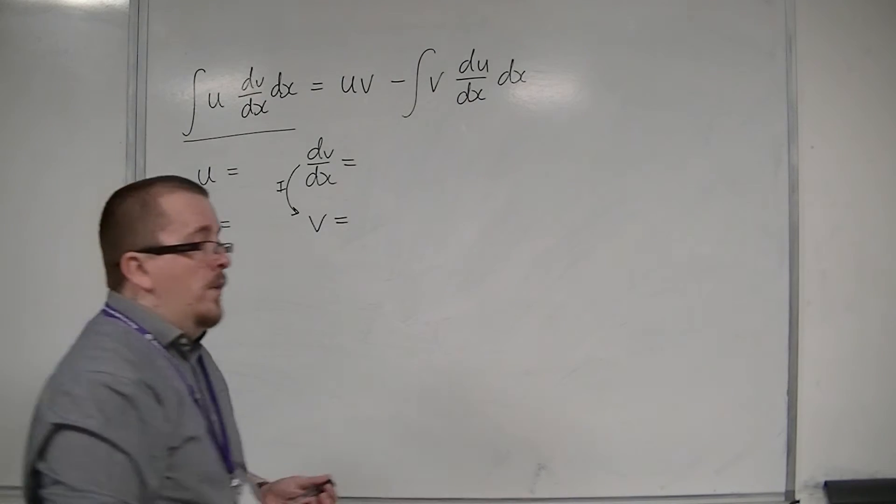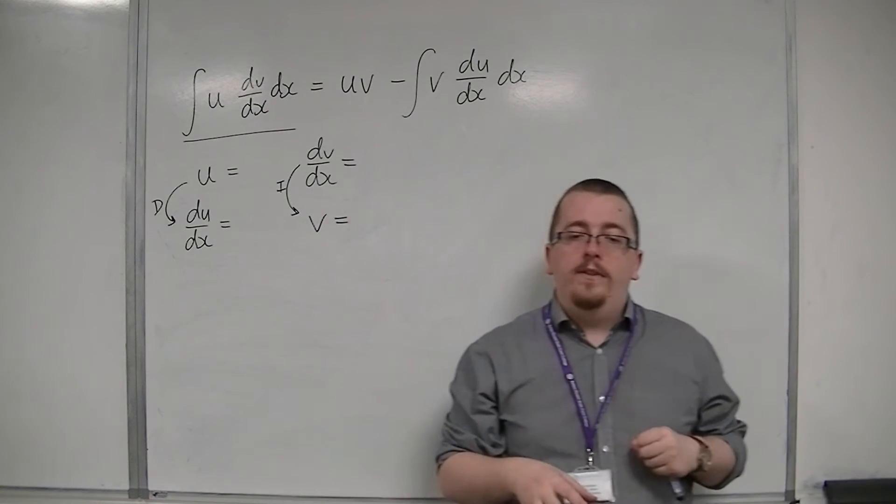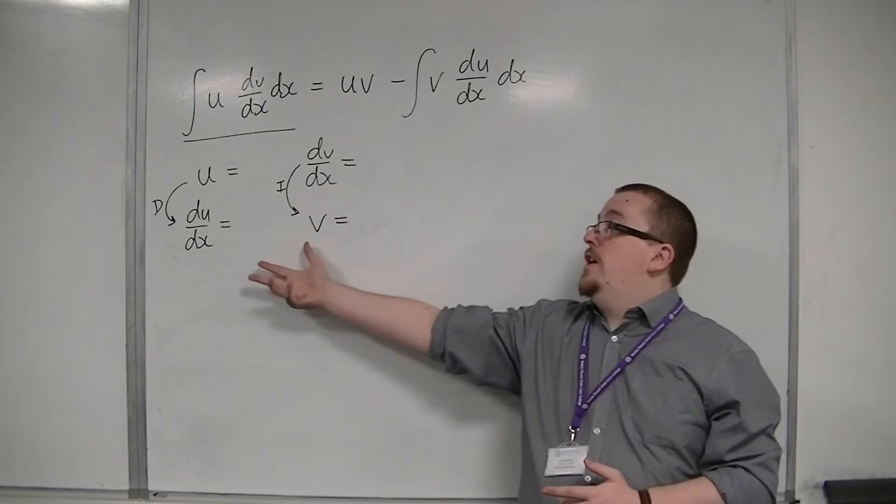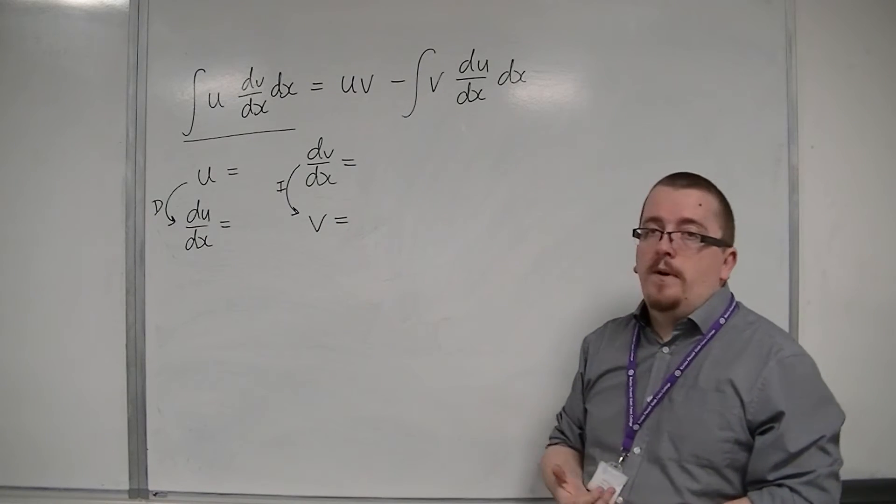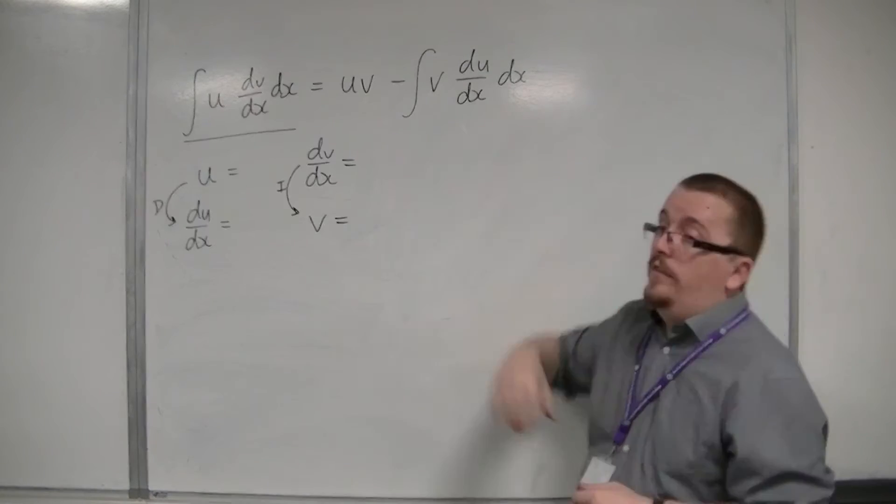So, there are these two pieces that I must identify which is which to start off with. And then I can differentiate the u, integrate the dv by dx, and then substitute those bits into this formula. That is the process of integration by parts.